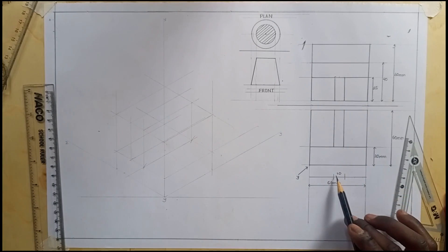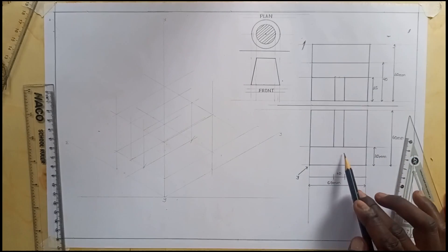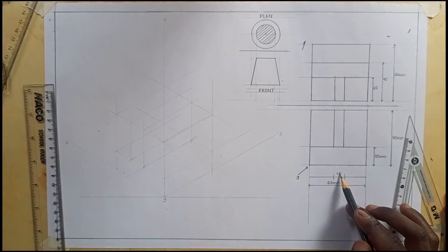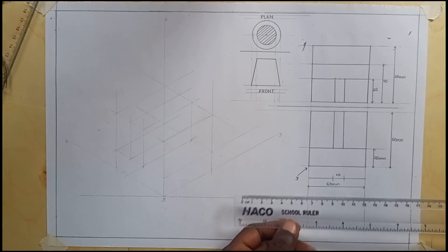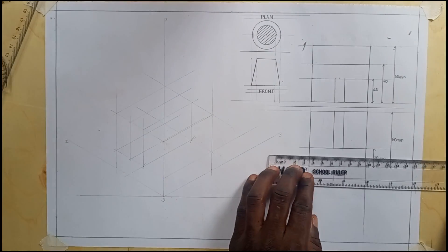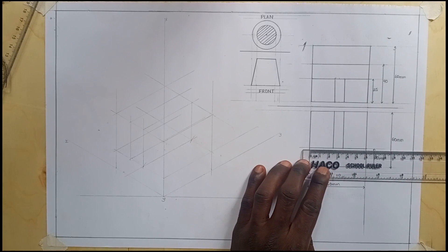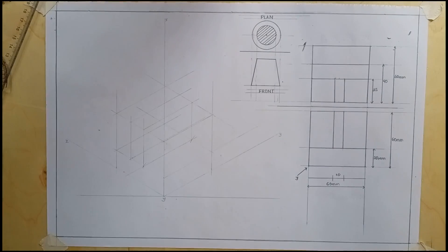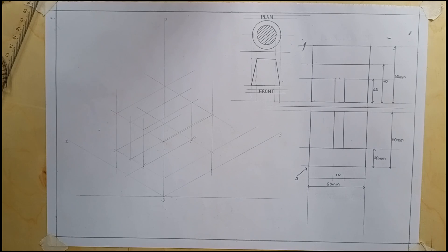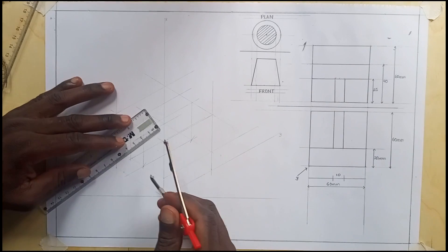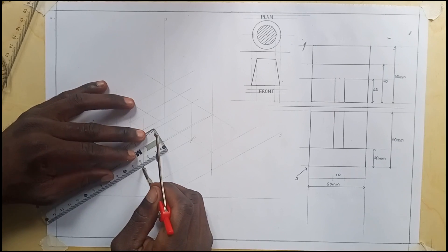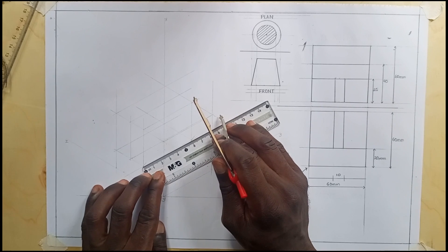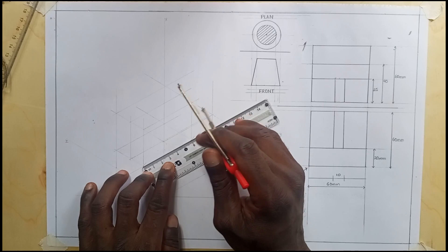The measurement of this figure here, it is 10. So I'll get my 60 minus 10, which is 50. I'll measure off this distance, which is 25. At your drawing, measure off 25, it's exactly there.